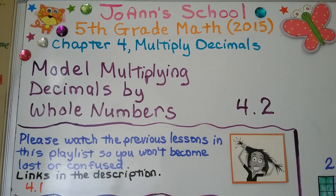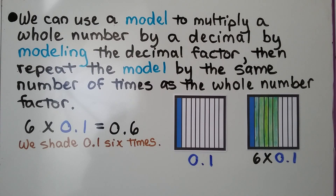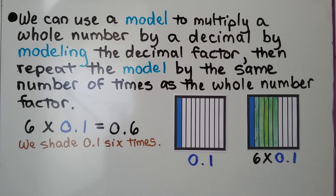Lesson 4.2. We're going to model multiplying decimals by whole numbers. We can use a model to multiply a whole number by a decimal by modeling the decimal factor, then repeat the model the same number of times as the whole number factor.